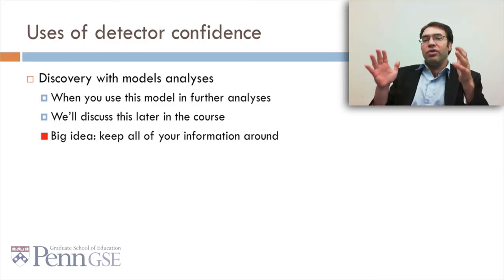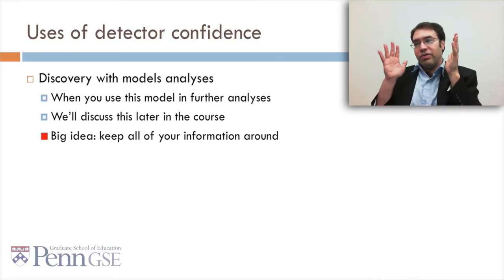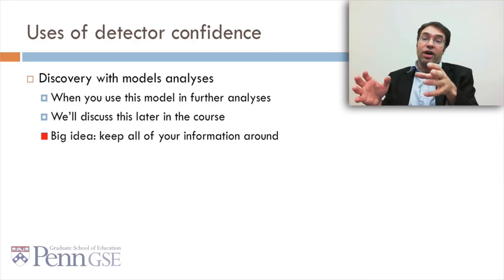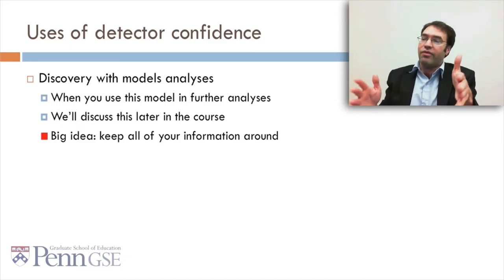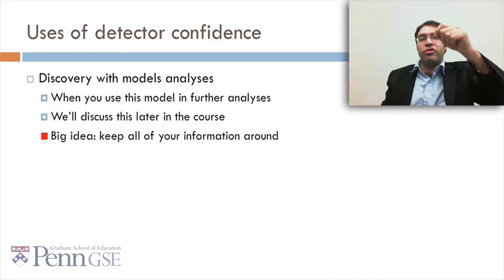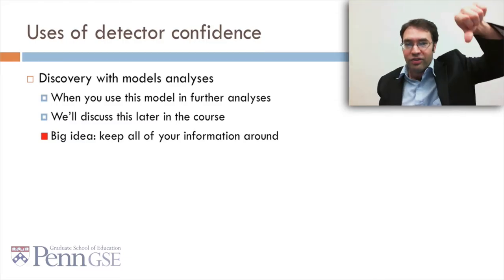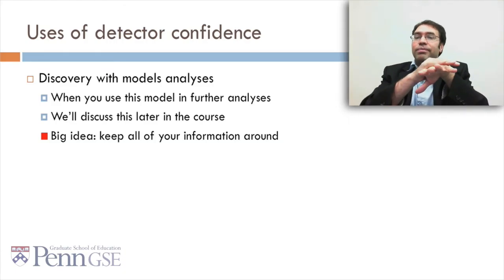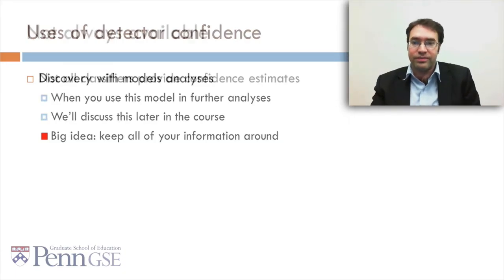If you take a student who is 60% confident that he's bored and a student who's 40% confident that he's bored every time, kind of on the average, you don't want to just treat the first student as always 1 and the second student as always 0. You'll be magnifying the apparent difference between the two students.